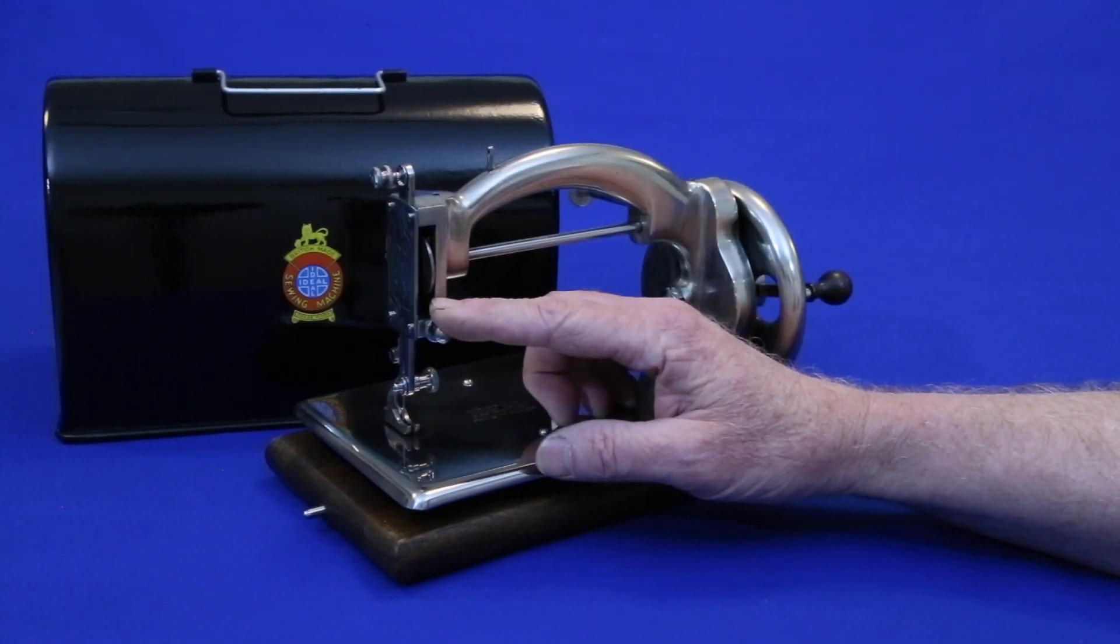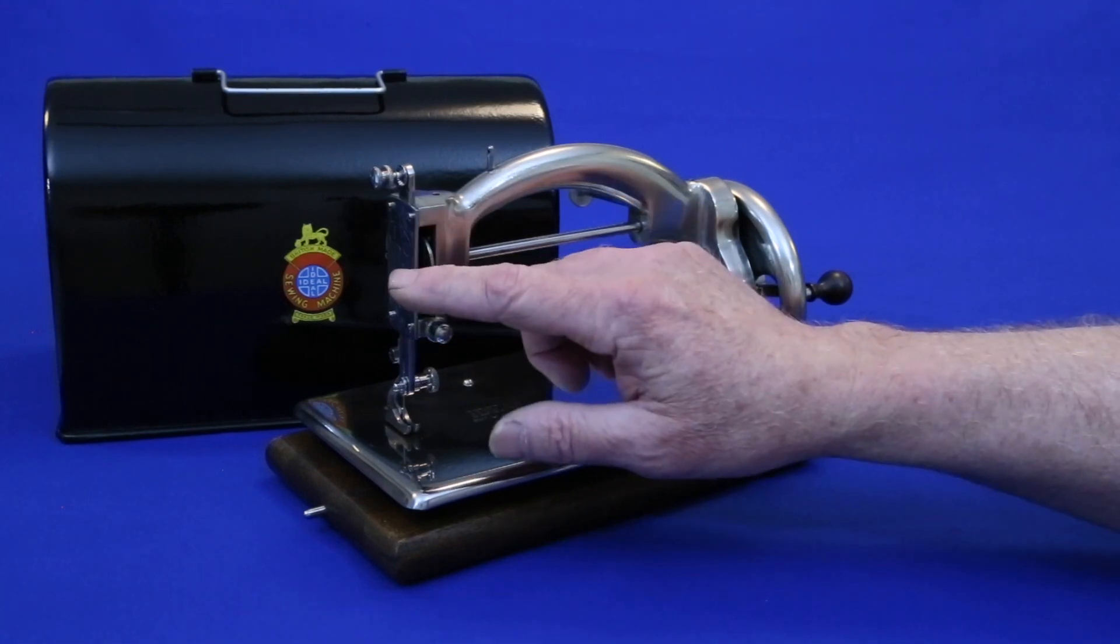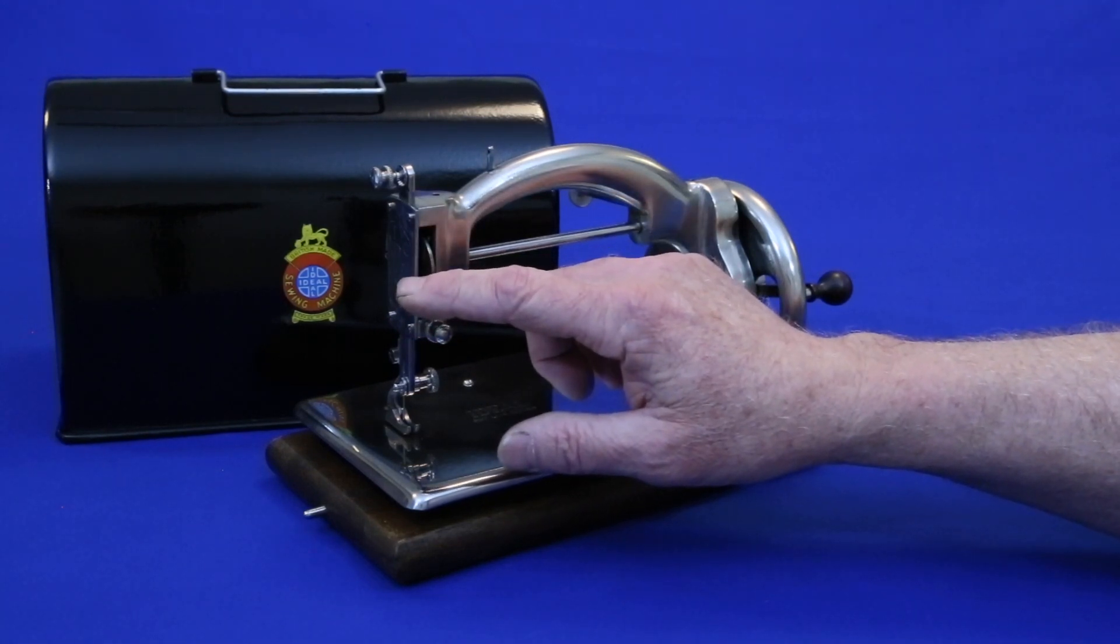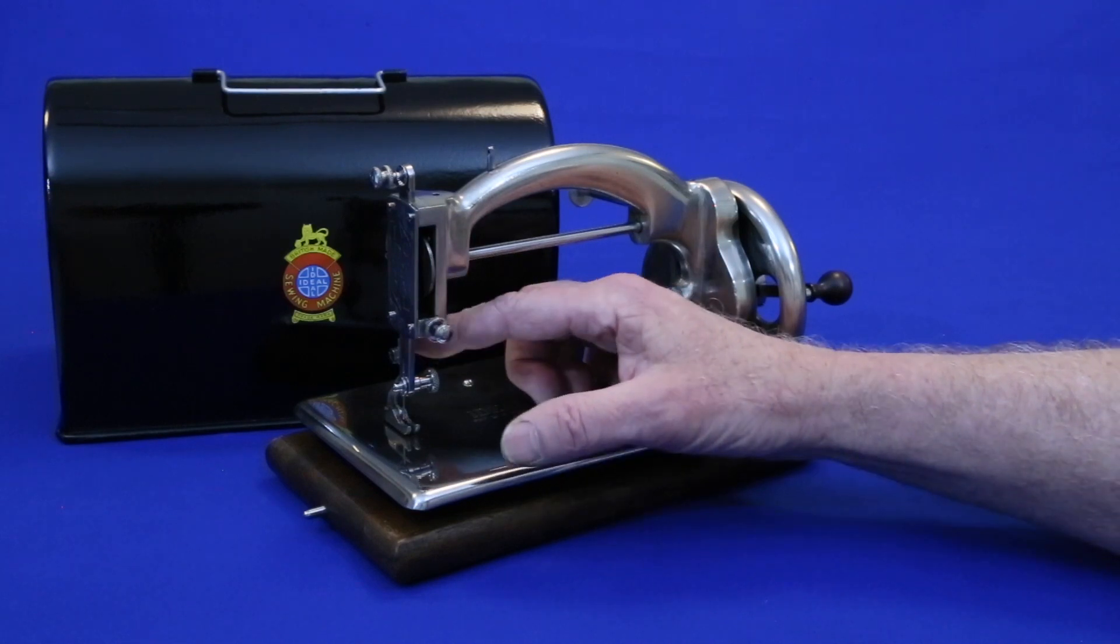That this is a Model B is most easily established by the presence of the engraved needle bar cover and an adjustable walking foot.